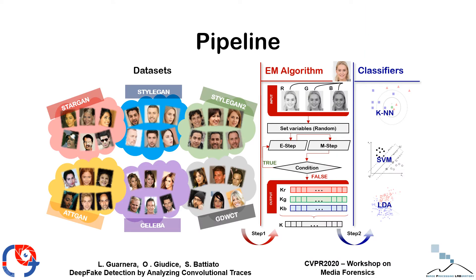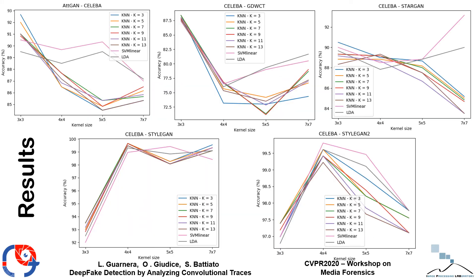Having extracted features from all images in our dataset, we employed naive classifiers like KNN, SVM, and SVM with LDA to solve a binary classification problem between a real image coming from CelebA and an image coming from one of the five different techniques. Results have proven that the feature is discriminative enough to differentiate between CelebA and each of the five techniques.